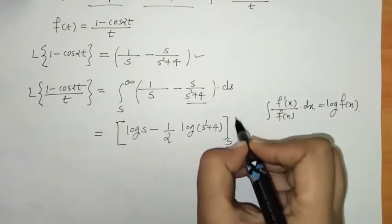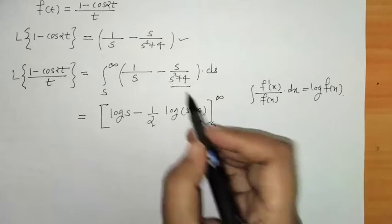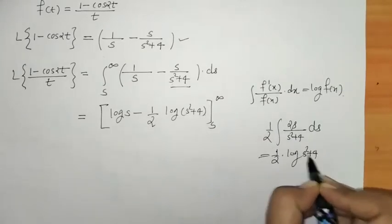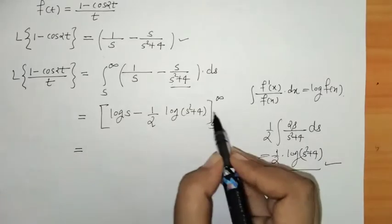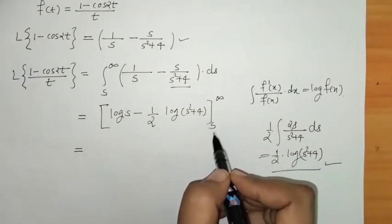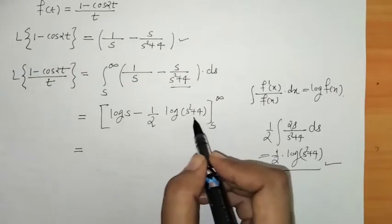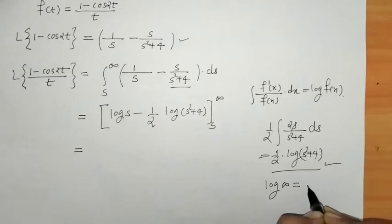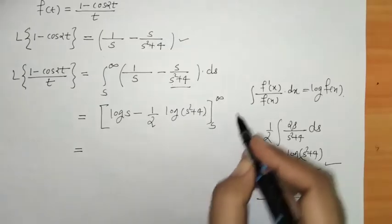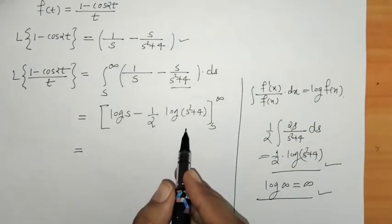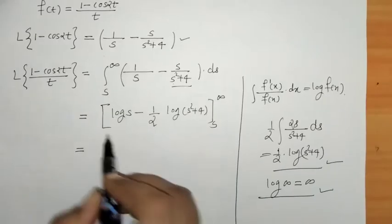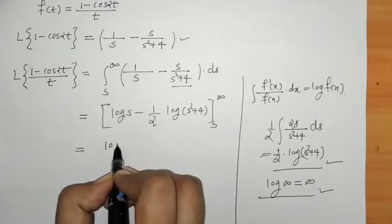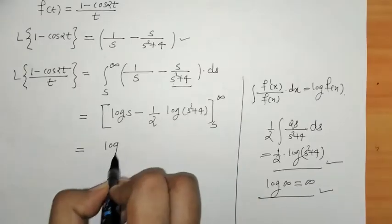When we put the upper limit s = infinity, we get log(infinity) and log(infinity) is infinity, so we will not get a finite Laplace. To get a finite Laplace, we need to make an adjustment. We apply the log rule to combine the terms.